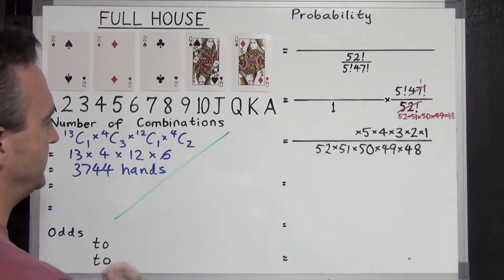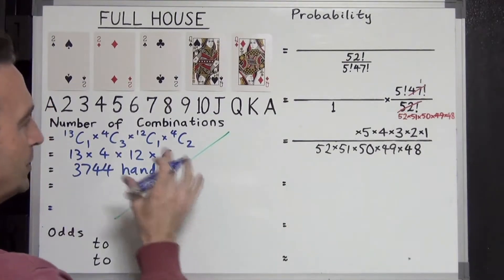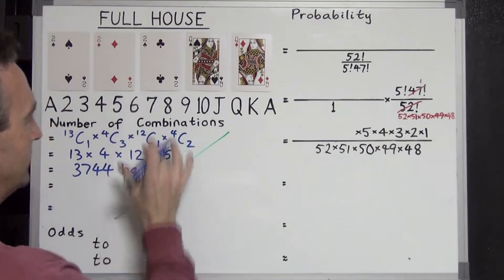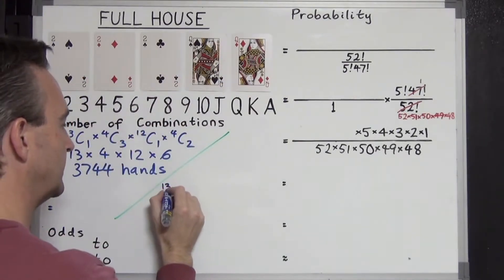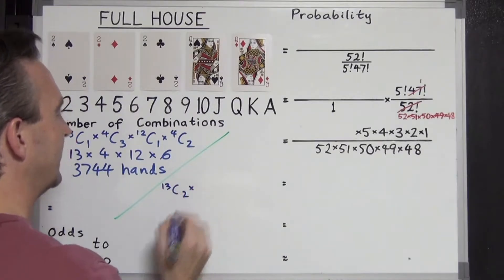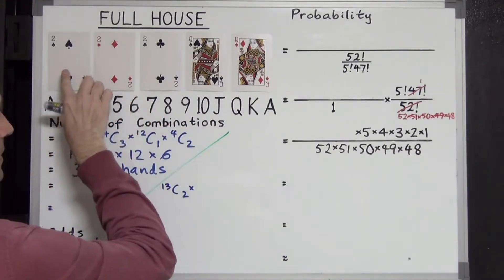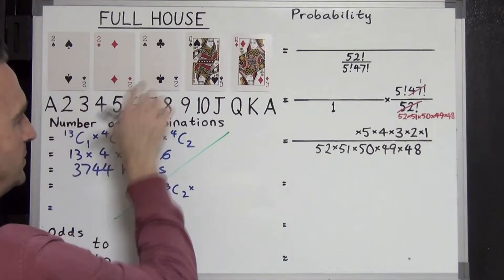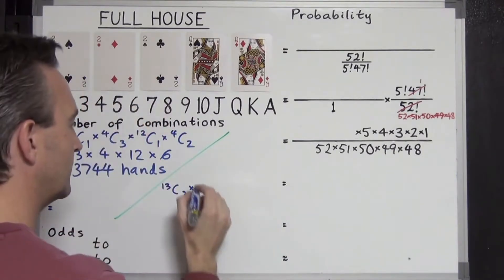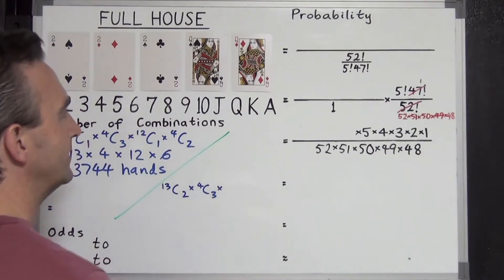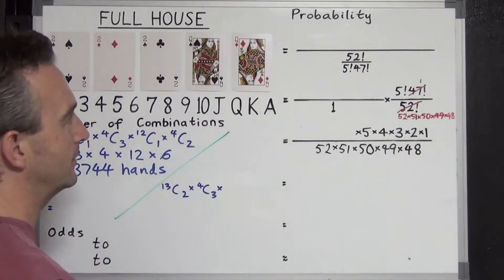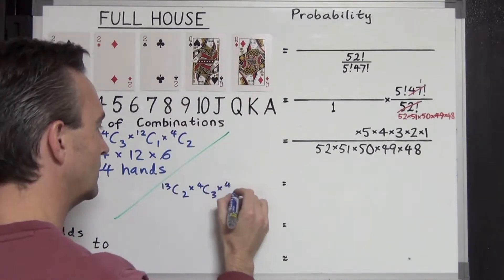You might be curious, is there another way to get this answer? There is. Straight away you can choose your two ranks first. Out of the 13 ranks, choose the two ranks straight away, 13C2. And then you've got four available and we choose three for the three of a kind, 4C3. And then we choose two out of four for our two of a kind, 4C2.